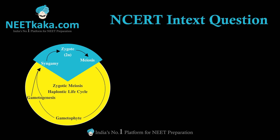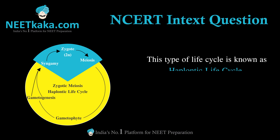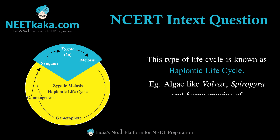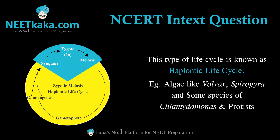The gametophyte, which is haploid, remains the same as the main body. This type of life cycle is also known as the haplontic life cycle, which is common in algae like Volvox, Spirogyra, and some species of Chlamydomonas, as well as in protists. I hope this helped you.